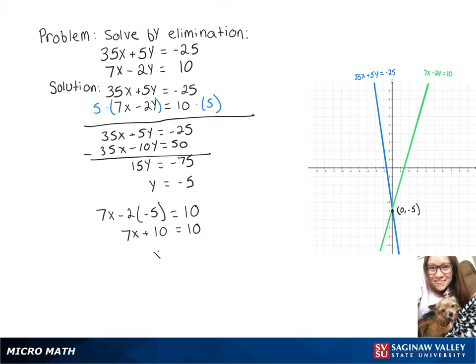Solving for x there gives us x equals 0. So our solution to this system is 0, negative 5, which on our graph is where the lines intersect.